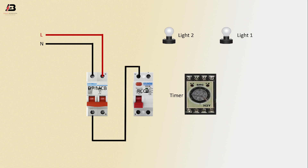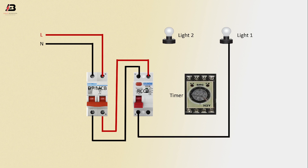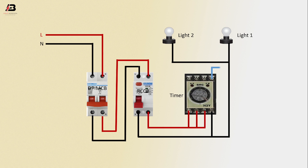From DP MCB, connect RCCB — phase connection and neutral connection. From RCCB, connect light one and light two neutral connection. Input to timer — phase connection. Input to timer — total three terminals.